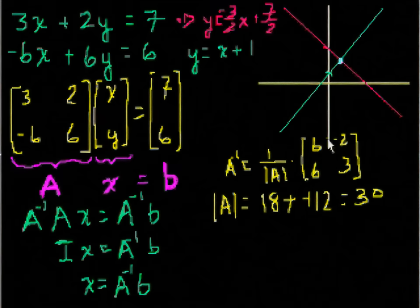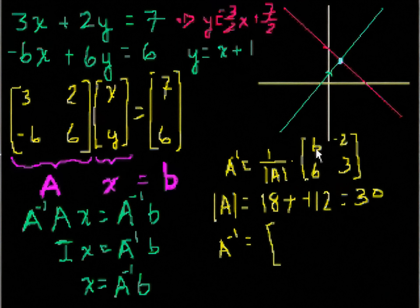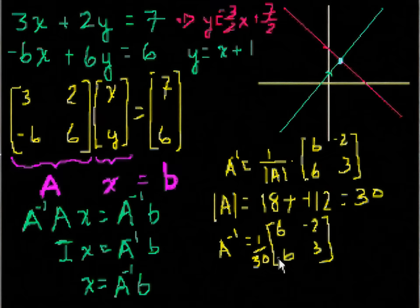So what does A inverse equal? 1 over 30 times this thing. So A inverse is equal to, we could even keep the 1 out of 30 on the outside. It might simplify things. Well, actually, I'll put it. So A inverse is equal to what? This divided by 30, so that's 1 5th minus, actually, I do want to keep it on the outside because it's going to make the later multiplications easier. So anyway, A is equal to 1 30th times 6 minus 2, 6, 3. That's A inverse. So now let's solve for x and y. So we said x and y is equal to A inverse times b.